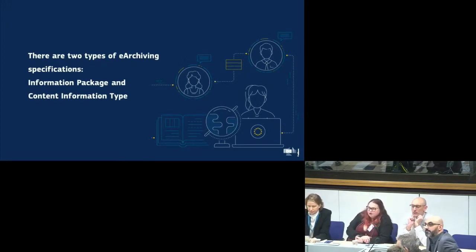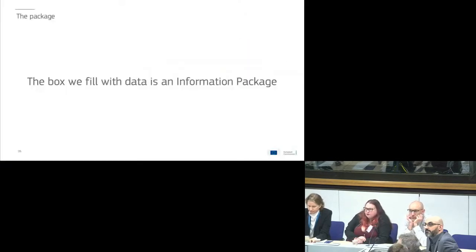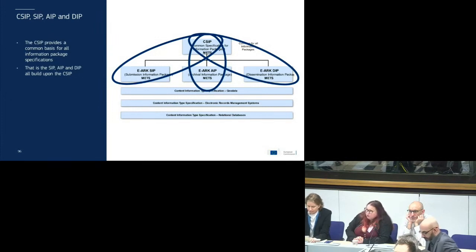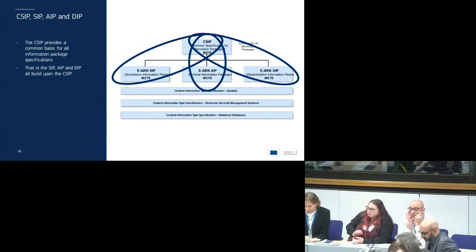We have a number of specifications — two types of them: one for the information package and one for the content information type. There are four specifications for the package. The CSIP is the common one defining all the bases for all information packages. The SIP, AIP, and DIP extend and put on the special things needed in the submission case, in the archival case, and in the dissemination case — but they are all based upon the CSIP. We don't want to write everything twice; we just write it once.